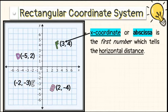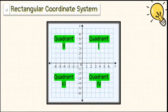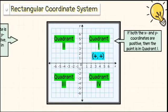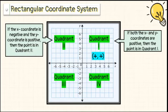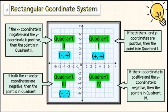The x-coordinate, or abscissa, is the first number, which tells the horizontal distance. The y-coordinate, or ordinate, is the second number, which tells the vertical distance of the point from the origin. The signs of the first and second coordinates of a point vary in the four quadrants. If both the x and y coordinates are positive, then the point is in quadrant 1. If the x-coordinate is negative and the y-coordinate is positive, then the point is in quadrant 2. If both the x and y coordinates are negative, then the point is in quadrant 3. You can easily tell which quadrant an ordered pair is located in by simply looking at the signs of the coordinates.